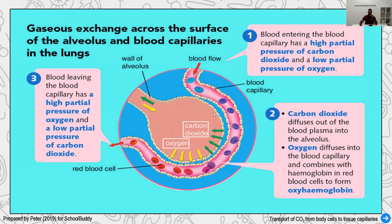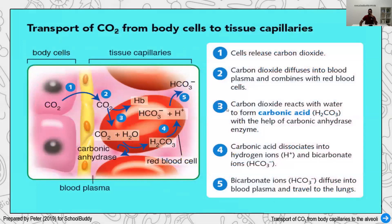The exchange of carbon dioxide and oxygen happens in the blood capillaries. However, the process is more complex than it appears. Carbon dioxide from body cells needs to pass through the capillaries. It first passes through the epithelial cells into the tissue capillary area containing red blood cells.